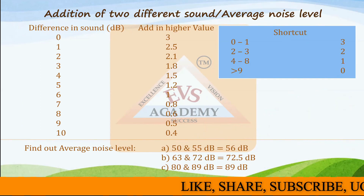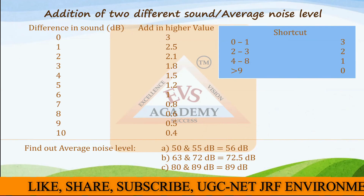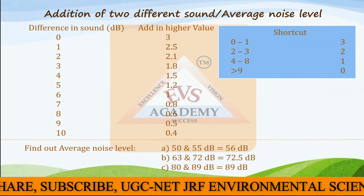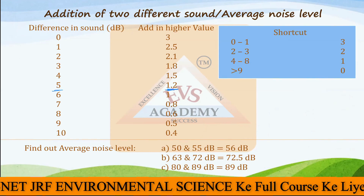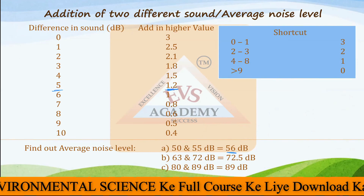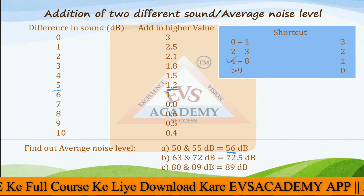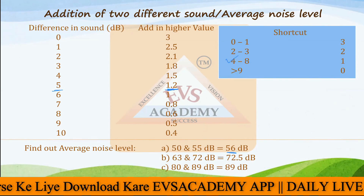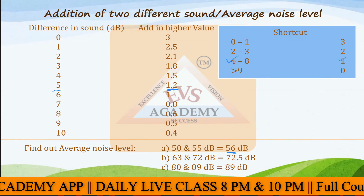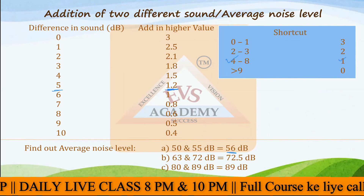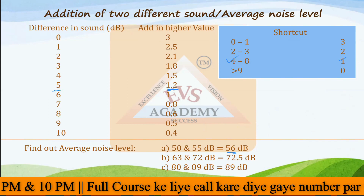A few examples are provided. Find the average noise level of 50 and 55 decibels. The difference is 5 decibels, so you add 1.2 to the higher value: 55 plus 1.2 gives 56.2 decibels as the exact answer. Using the shortcut table, a difference of 5 falls in the range 4 to 8, so you add 1 to the higher value, giving 56 decibels — very close to the exact answer of 56.2.